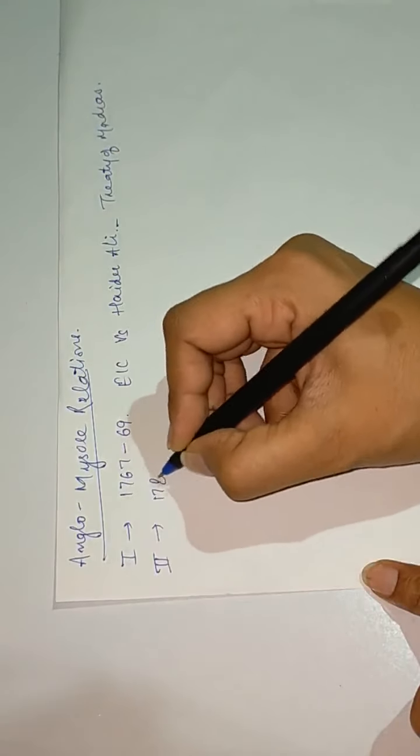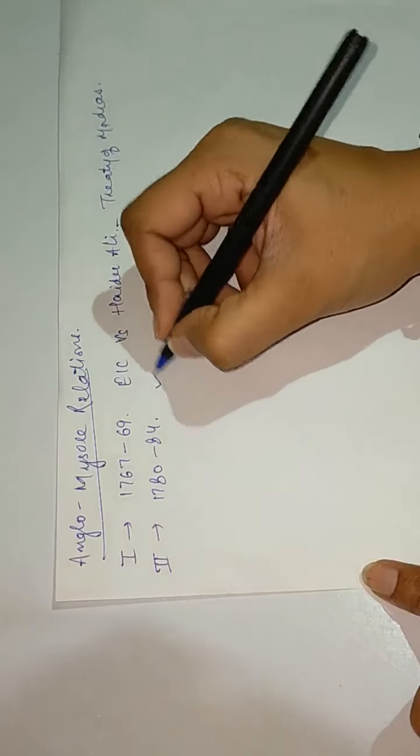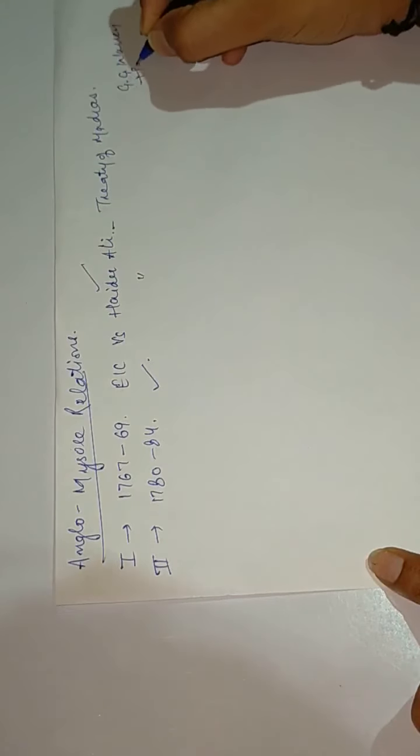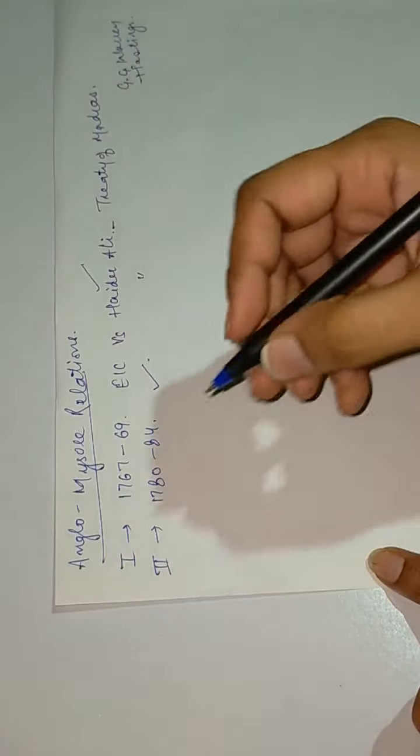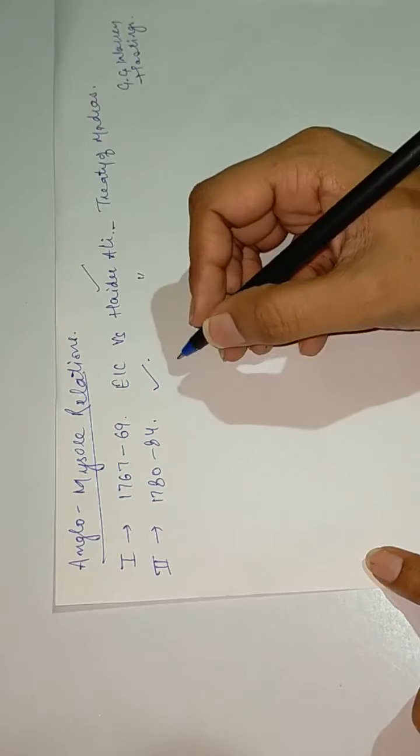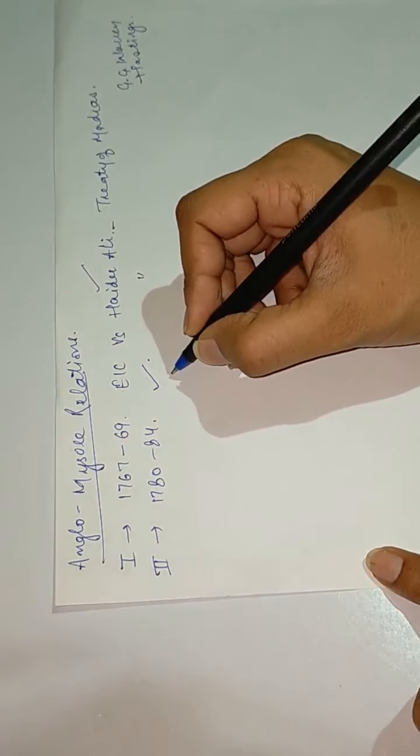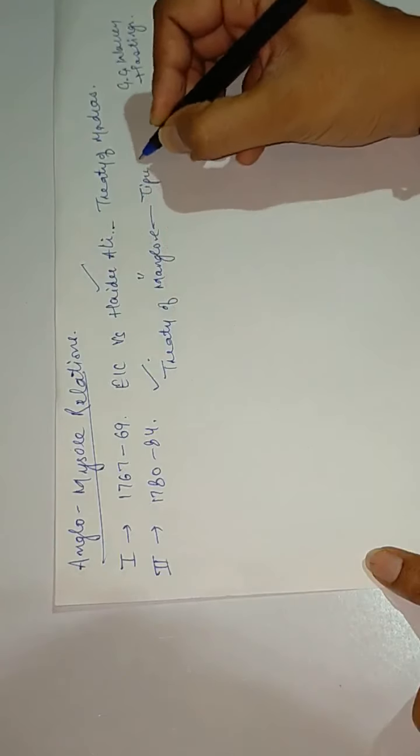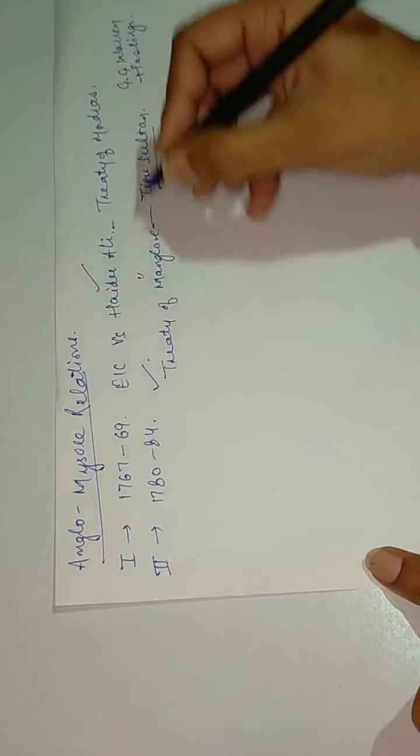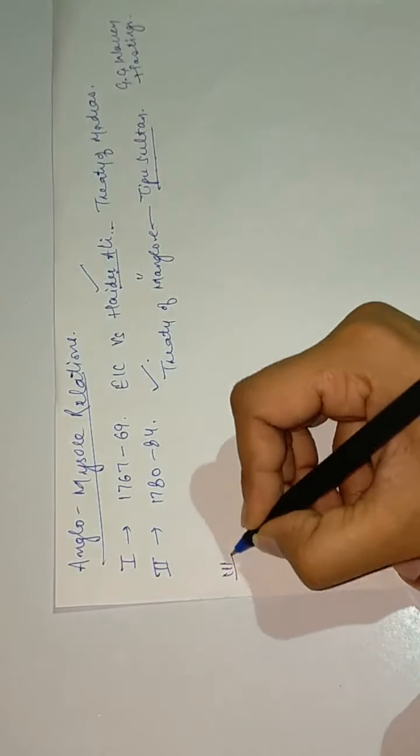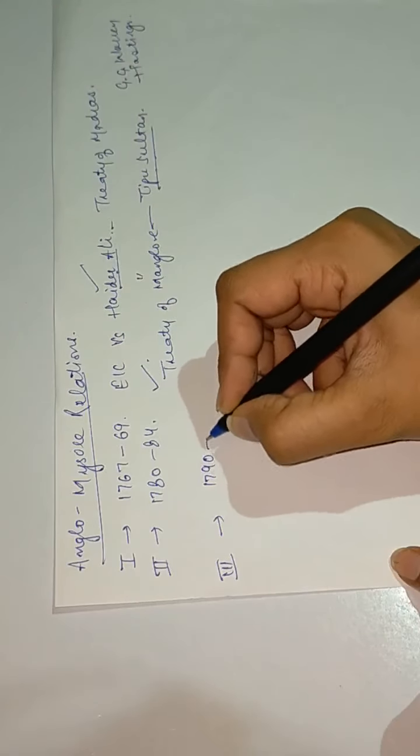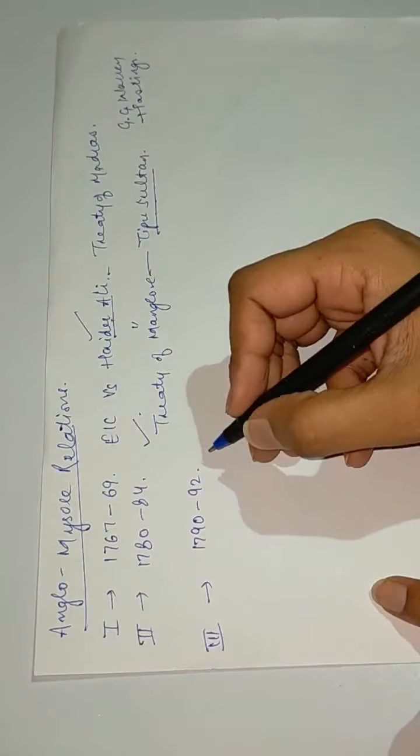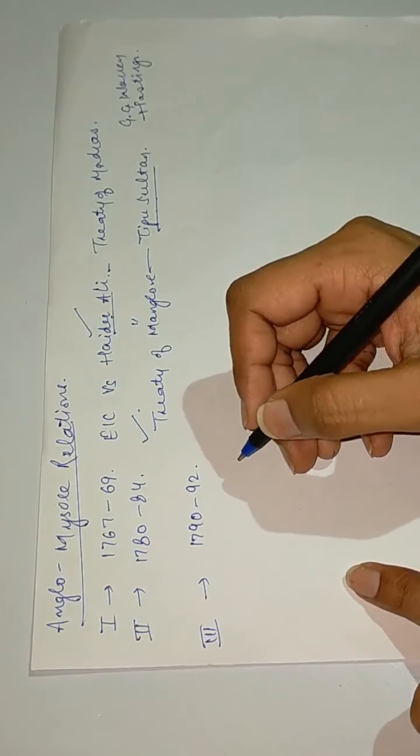Second Anglo-Mysore War was 1780 to 1784, East India Company versus Hyder Ali. Governor General was Warren Hastings. The treaty was known as the Treaty of Mangalore, and this treaty was signed by Tipu Sultan, Hyder Ali's son. Third war was 1790 to 1792.